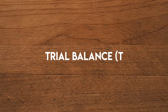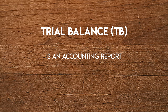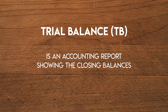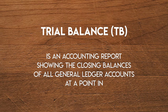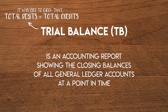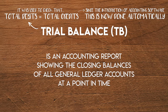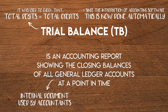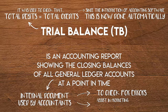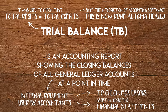A trial balance, or TB when abbreviated, is an accounting report showing the closing balances of all general ledger accounts at a point in time. Back in the days of accounting on paper it was used to check that the debit and credit column totals match each other. However, since the introduction of accounting software that check has become less important since it's now done automatically. Nowadays it is an internal document typically used by accountants to check for errors and assist in producing financial statements. It is also used by auditors in deciding which accounts to review.